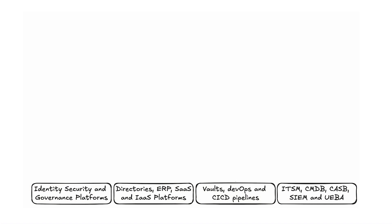The first dimension of why we are building this intelligence — which is so powerful — is the massive amount of data sets we are collecting from a wide variety of platforms: your identity security and governance platforms, your IDA platforms, directories, apps, SaaS applications, infrastructure workloads, vaults, CI/CD pipelines, as well as other security platforms like CMDBs and IDSMs.